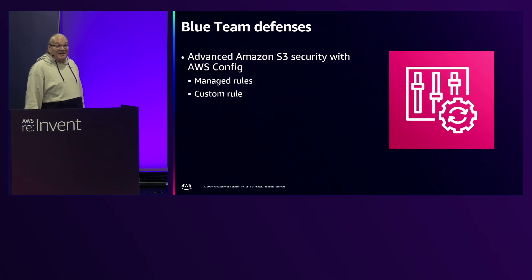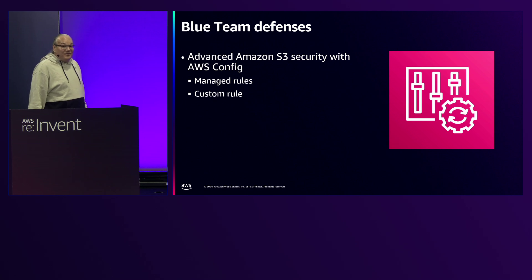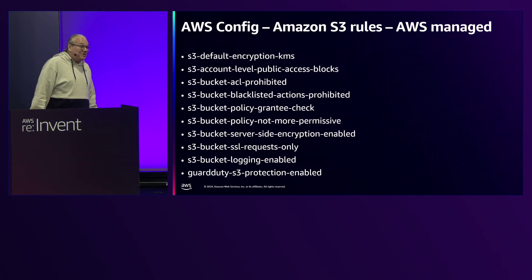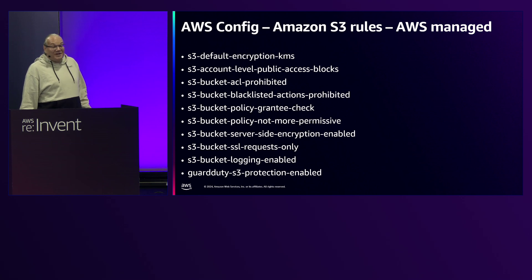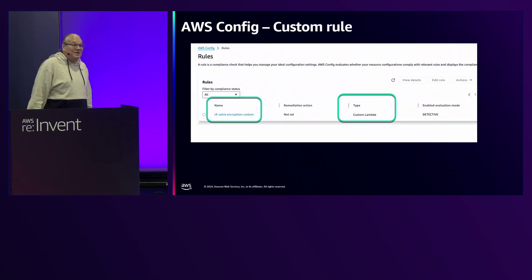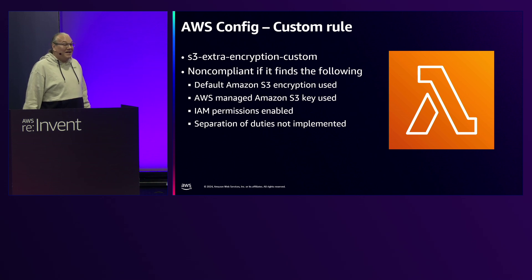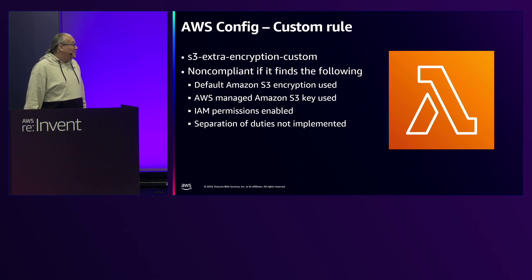Now let's talk about the blue team side — how do we block this? In Amazon S3 there are a number of AWS Config rules built in. There are nine that I like to use for S3. The first one is S3 default KMS encryption, which marks a bucket as non-compliant if it's using insecure default encryption. I also like to use a custom config rule backed by Lambda, which marks a bucket non-compliant if default encryption is used, if an Amazon S3 key is used, if IAM permissions are enabled on the KMS policy, or if separation of duties is not implemented.